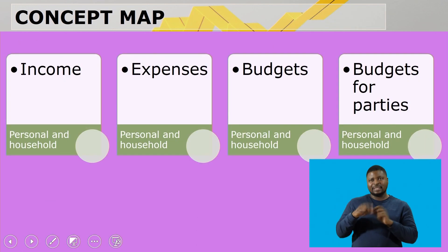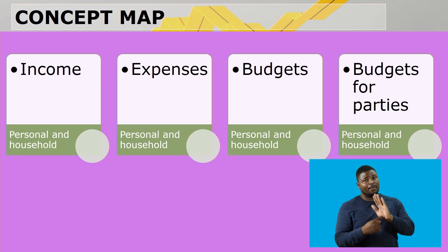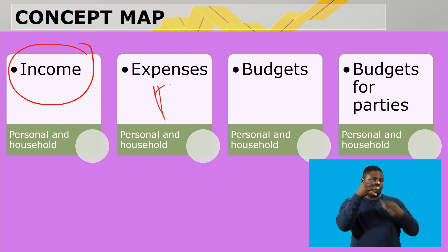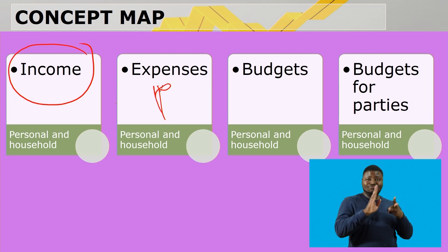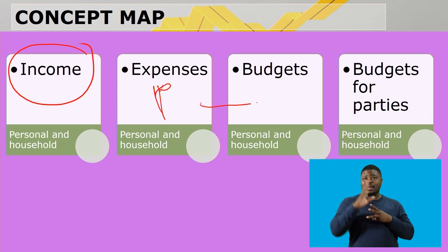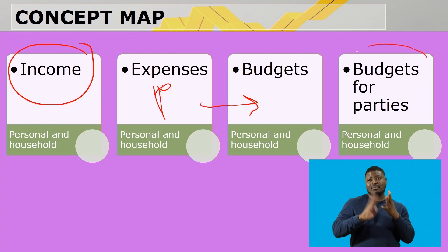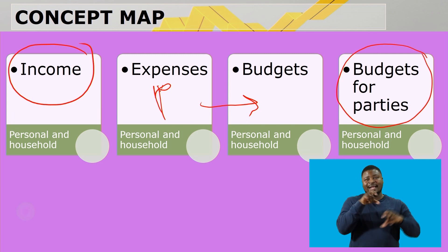Let's look at the map. Today first we're going to chat about income, then we'll do expenses. After income and expenses we will look at budget — that's very important — and then one we all love: a budget for a party. We love getting together, right?